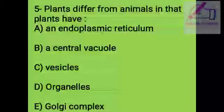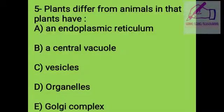Question number 5: Plants differ from animals in that plants have: A. An endoplasmic reticulum, B. A central vacuole, C. Vesicles, D. Organelles, E. Golgi complex. The right answer is A, central vacuole.